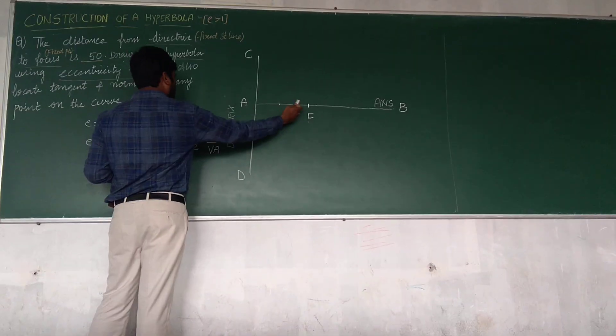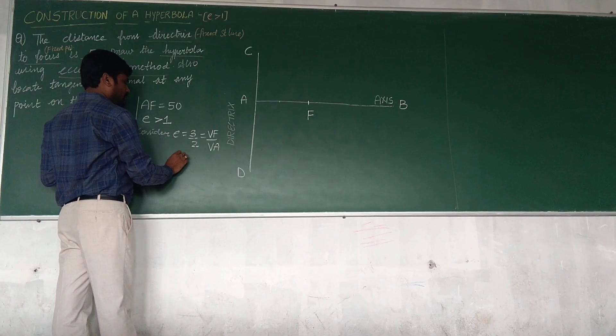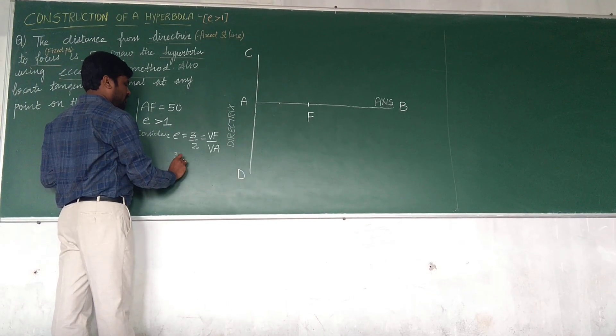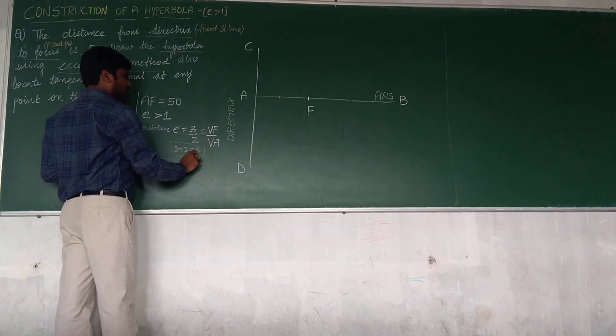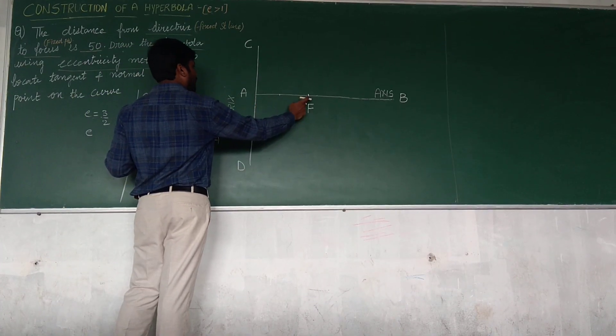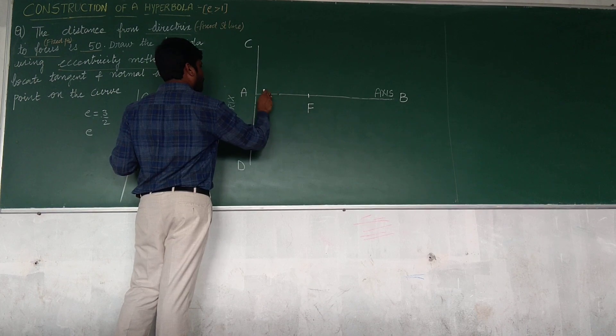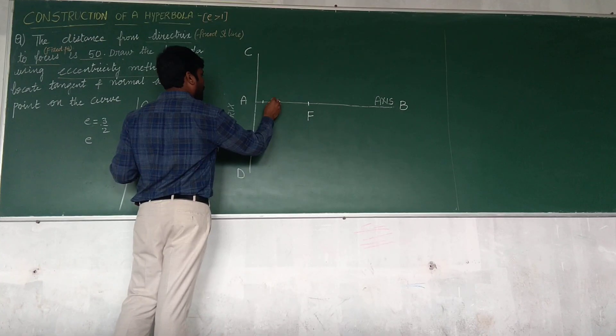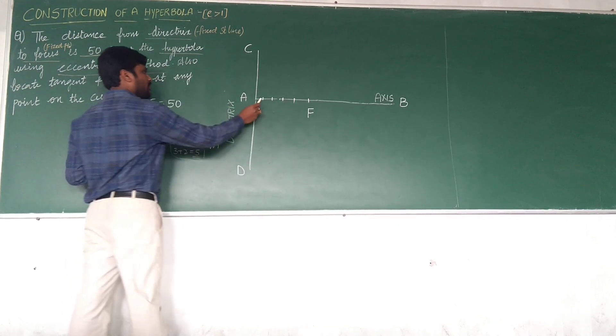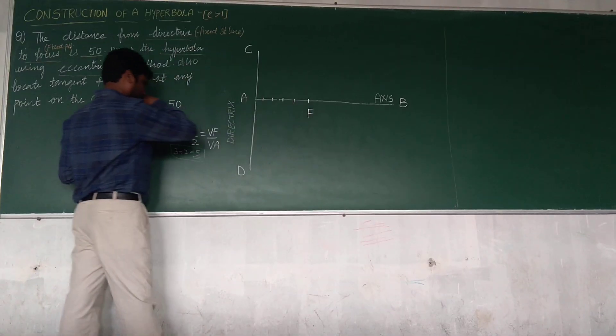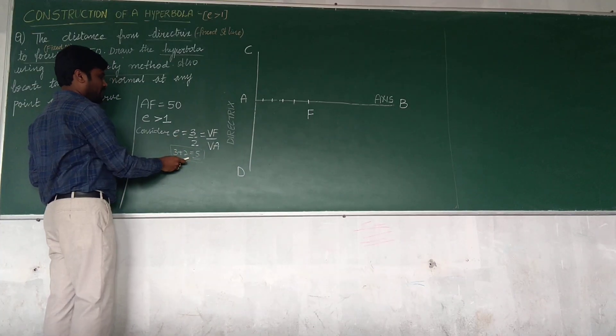Now how to divide this? AF, 3 plus 2, numerator and denominator is 5. That means I am going to make 5 equal divisions between A to F. So between A to F, I am going to divide it into 5: 1, 2, 3, 4 and that is 5. 3 plus 2 is 5.